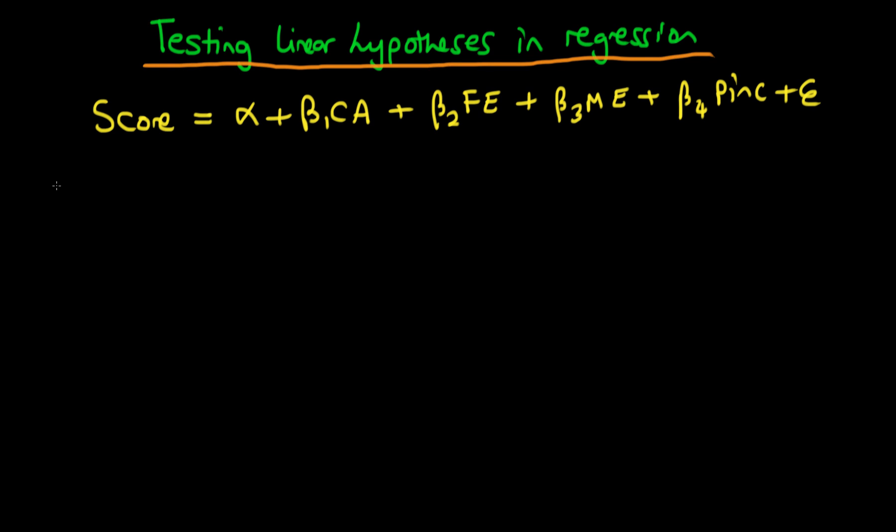So perhaps our null hypothesis which we're interested in testing here might be that beta 2 equals 1 and beta 3 equals 1 as well as beta 1 being equal to 0. So those three conditions might be our null hypothesis and our alternative hypothesis is just that any of these isn't true. So any of these violations will result in our null hypothesis being rejected.